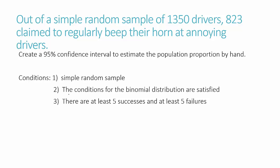The second condition is that it needs to meet the binomial distribution. Do we have only two possible outcomes? Yes — they either beep their horn or they do not. Do we have a proportion for p that say yes and q that say no? We certainly do. We found the proportion for p on the previous slide, and we can take 1 minus the p-hat proportion to find q. And do we have a set number of trials? We certainly do — our sample size is 1,350.